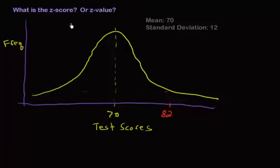Now a z-value or z-score is very easy to describe. It is simply the distance in terms of the number of standard deviations you are away from the mean.